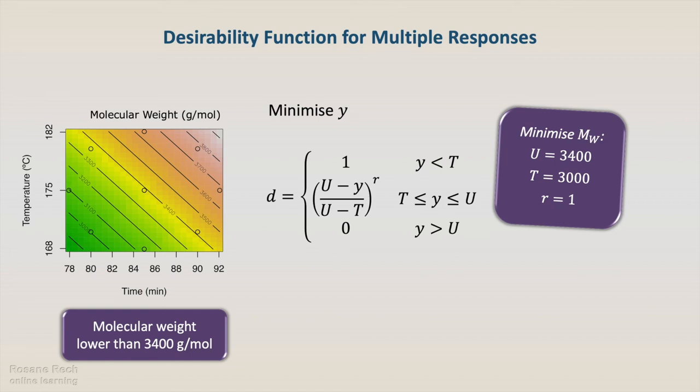Let's now use R for calculating the desirability functions. The code is in the DOEopt06.r file.